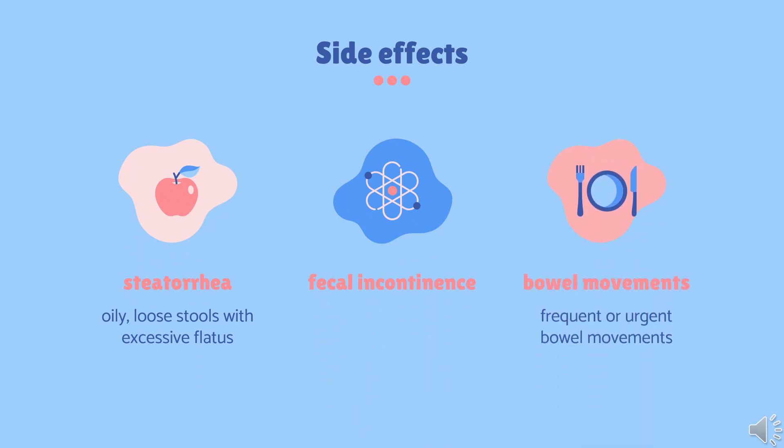Side Effects. The primary side effects of the drug are gastrointestinal-related, and include steatorrhea, oily loose stools with excessive flatus due to unabsorbed fats reaching the large intestine, fecal incontinence, and frequent or urgent bowel movements. To minimize these effects, foods with high fat content should be avoided.